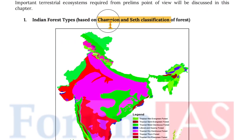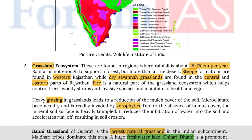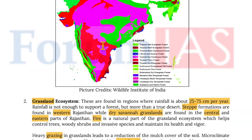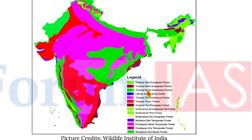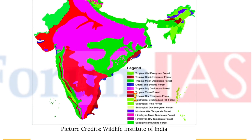The Indian forest types based on Champion and Seth classification include tropical evergreen, tropical wet evergreen, tropical semi-evergreen forest, tropical moist deciduous forest, littoral and swamp forest, tropical dry deciduous forest, tropical thorn forest, tropical dry evergreen forest, tropical broadleaved hill forest, subtropical pine forest, subtropical dry evergreen forest, mountain wet temperate forest, Himalayan moist temperate forest, Himalayan dry temperate forest, and subalpine and alpine forest.